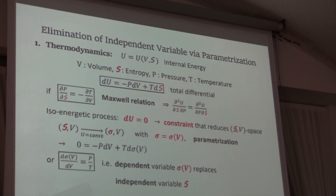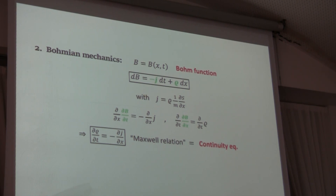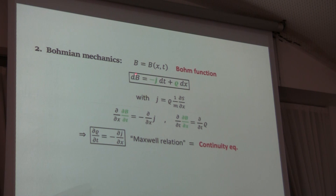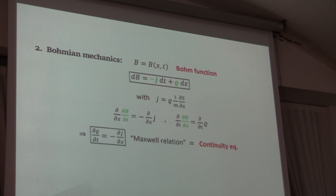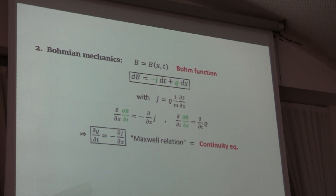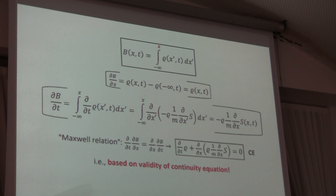How does this transform to our specific Bohmian problem? We defined a Bohmian function as a function of the two independent variables, position and time. Writing down the differential in this form, the partial derivative with respect to time is minus j, the current, and the partial derivative with respect to space is the density. If you want to fulfill this Maxwell relation, it turns out the Maxwell relation is just the continuity equation, which is in agreement with our initial assumption. The question is: what is the meaning of this Bohm function, and can we find a function that fulfills this relation? It turns out yes — this function is the so-called cumulative probability function.